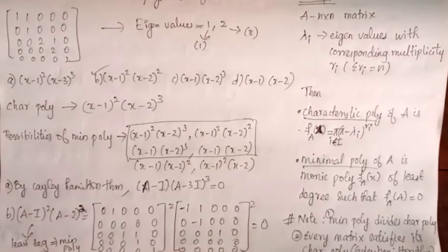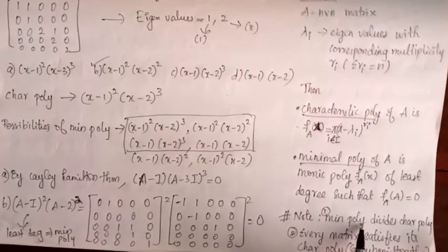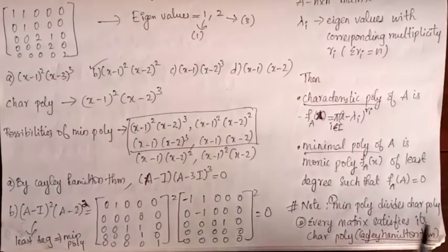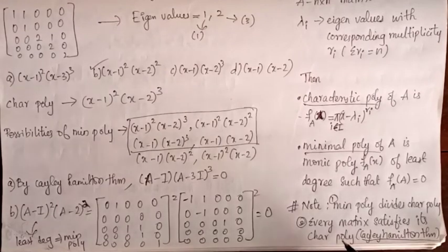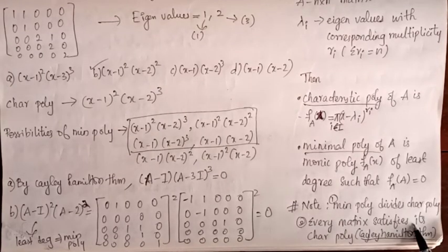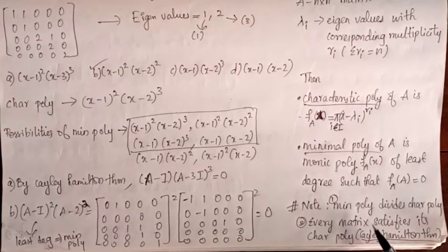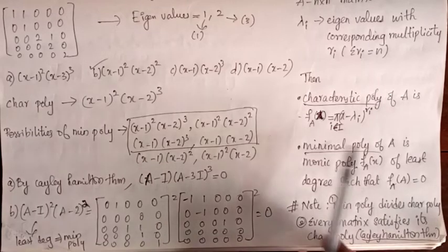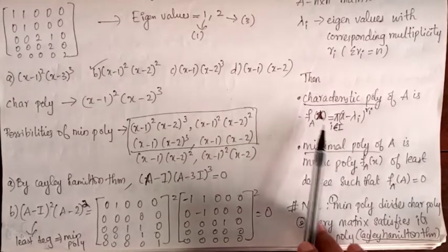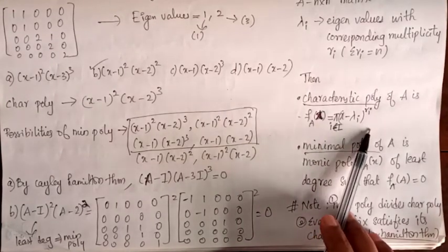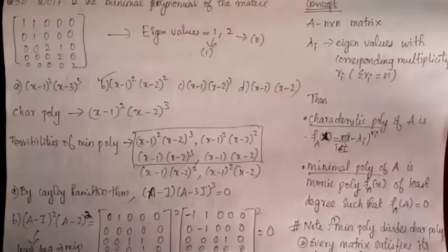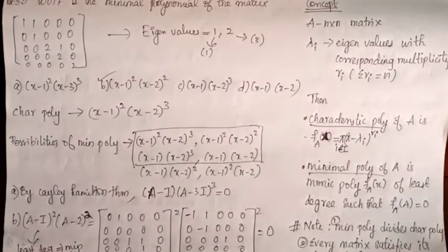Note that the minimal polynomial divides the characteristic polynomial, and every matrix satisfies its characteristic polynomial — that is the Cayley-Hamilton theorem. If we substitute A into the characteristic polynomial, it equals the zero matrix.